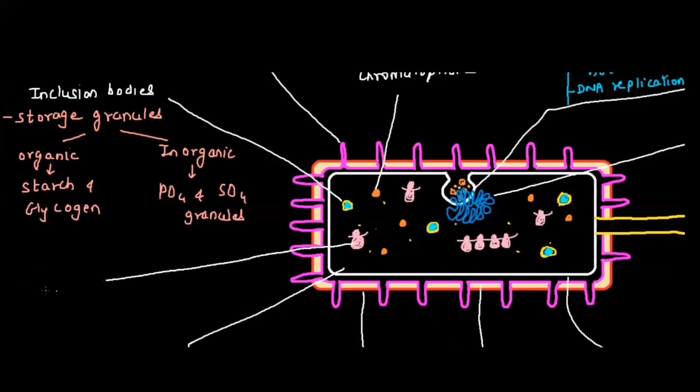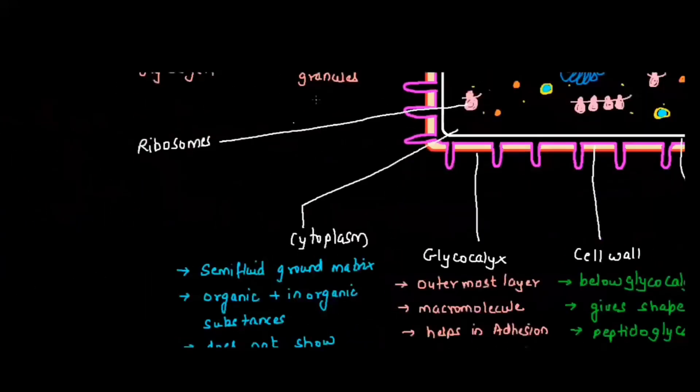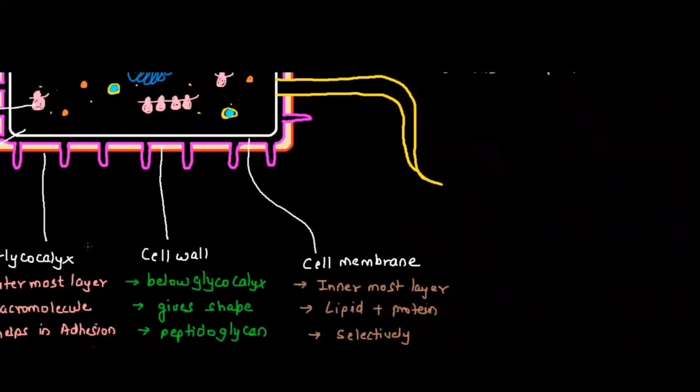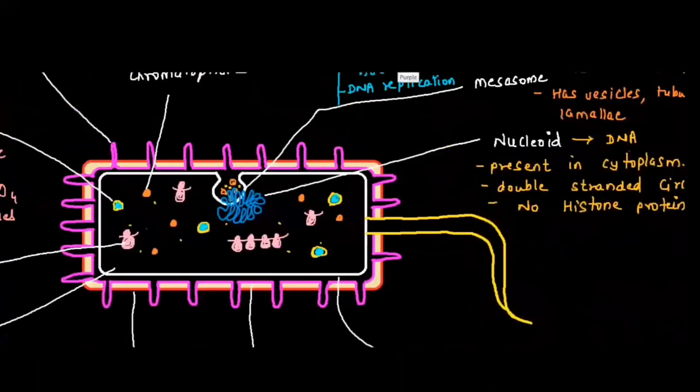Let's talk about another component found in the cell cytoplasm: ribosome. Ribosome is considered a protein factory, meaning it is involved in protein synthesis. Ribosomes are composed of rRNA and protein. In bacteria, you will get 70S type of ribosome, which is divided into two parts: 50S and 30S. We are not supposed to add these two. S stands for Svedberg's unit.